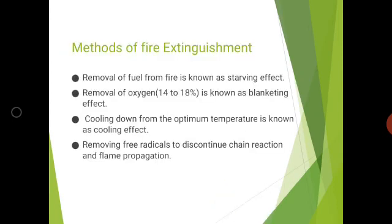The different methods of fire extinguishment are: removal of fuel, also known as the starving effect; removal of oxygen, known as the blanketing effect; reducing the temperature or cooling down from the optimum temperature, known as the cooling effect; and removing the free radicals in order to discontinue the chain reaction.